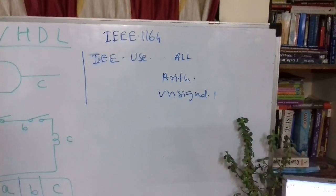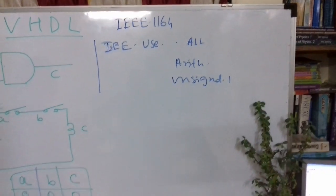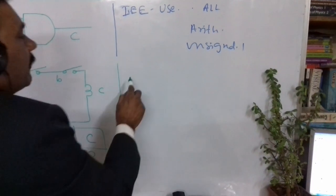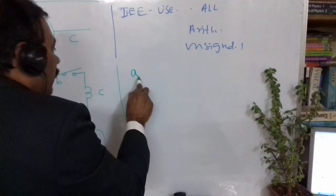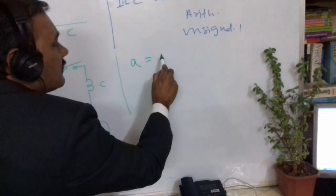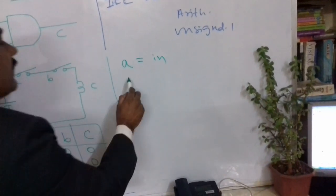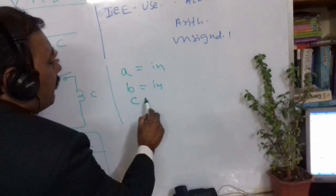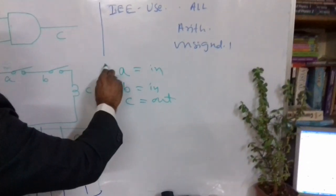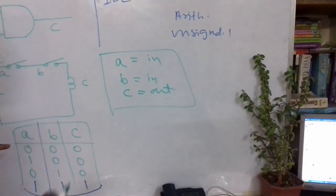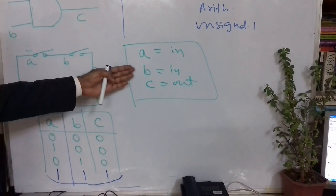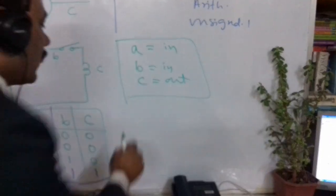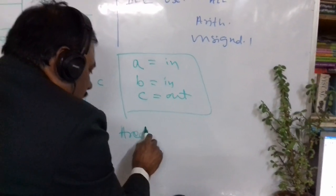The second step is the entity declaration. In the entity declaration, for this AND gate, you define A as an input, B as an input, and C as an output. Once you finish the entity declaration stage, you can proceed to the architecture.